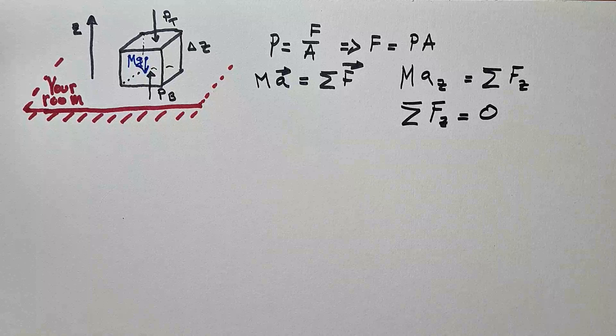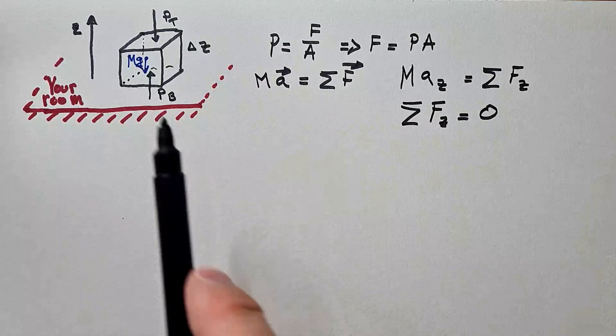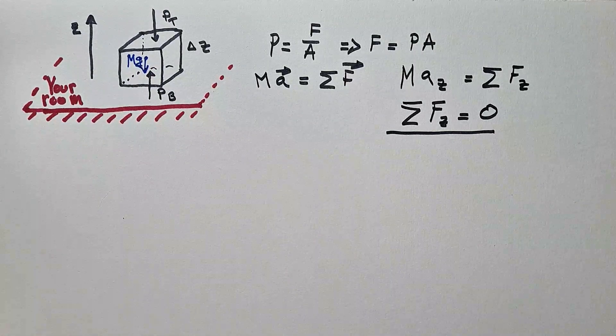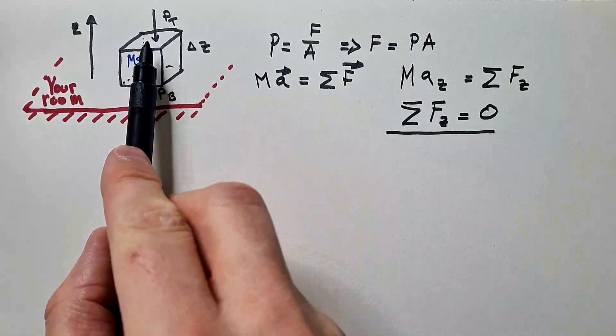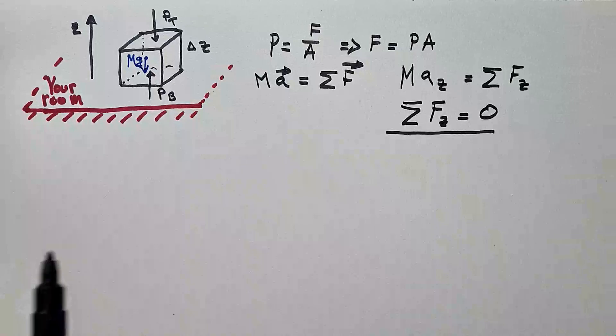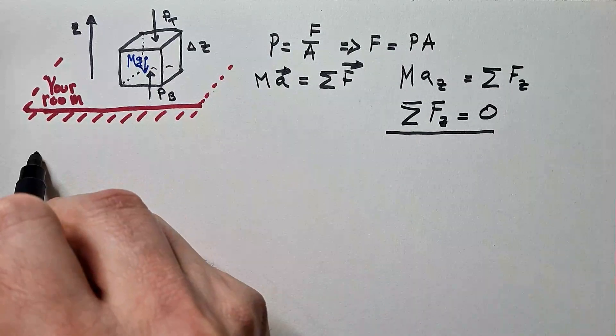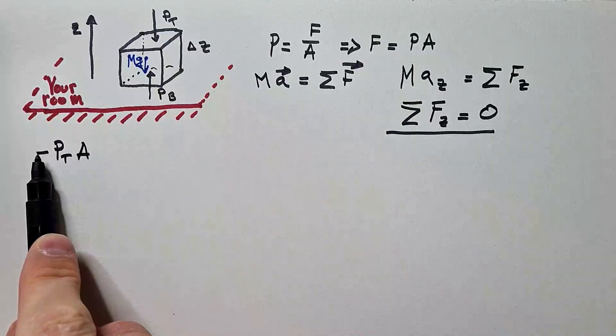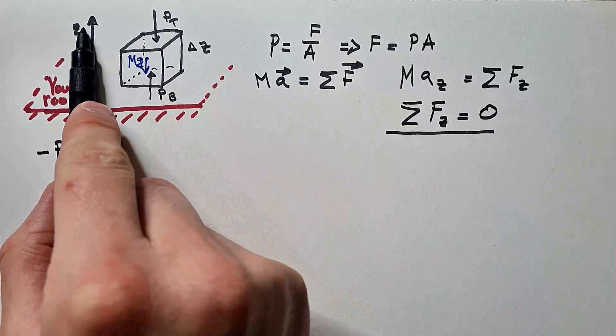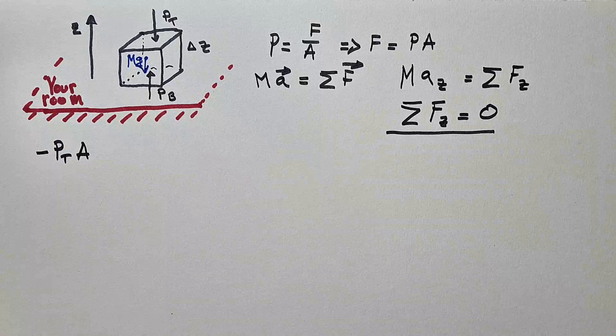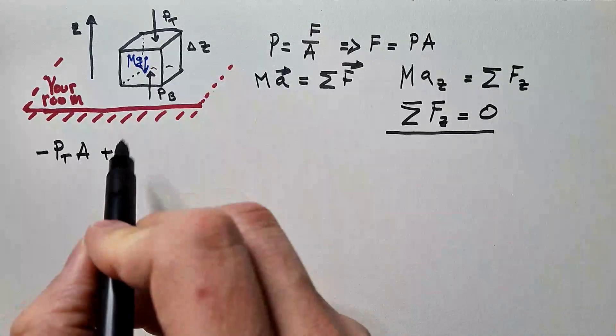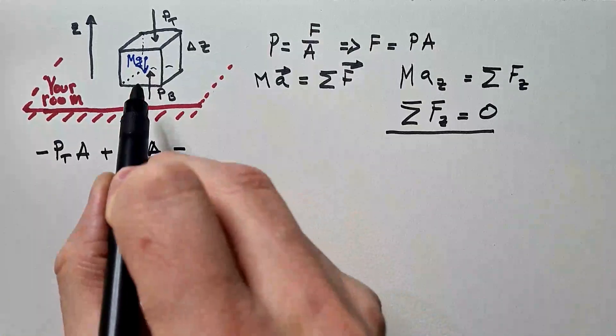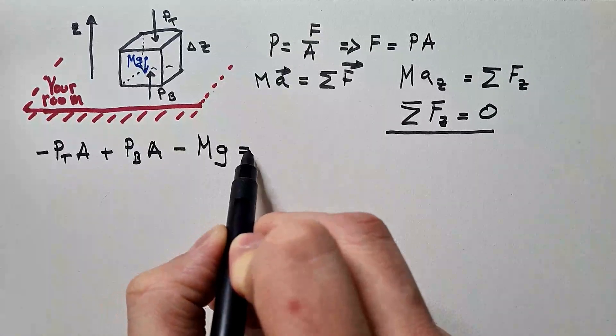Now, we need to list the forces that are acting on this box. In other words, we need to expand this expression. That should be easy. First, we have force due to the pressure on the top face. And using this expression, we can see that would be minus Pt times A, where minus indicates that the force is opposite of the positive z axis, plus force at the bottom, Pb times A, and minus mg. And that needs to be equal to zero.